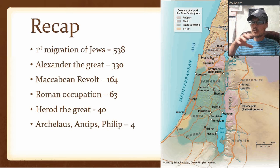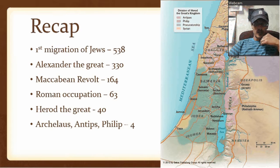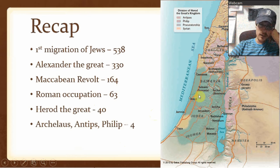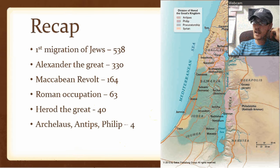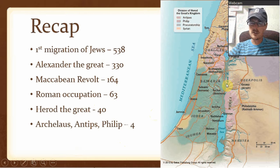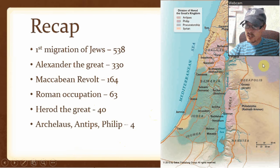That's where we get Festus and Felix and Pontius Pilate — all different people who ruled in Jerusalem. Antipas and Philip reign all the way into the 30s AD. Here's Antipas' area, and Philip has the area over here.